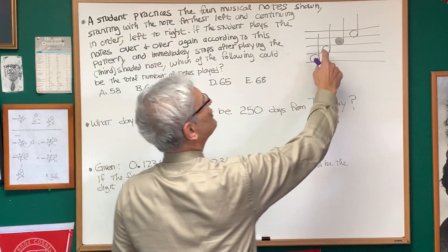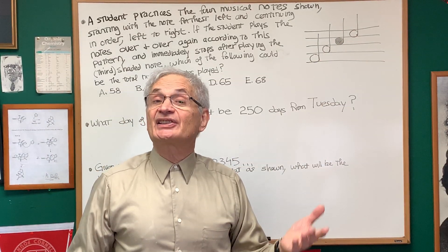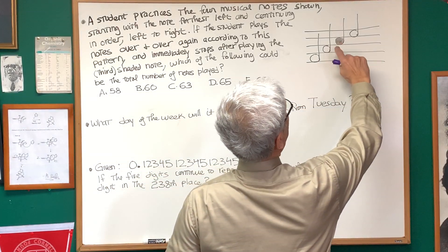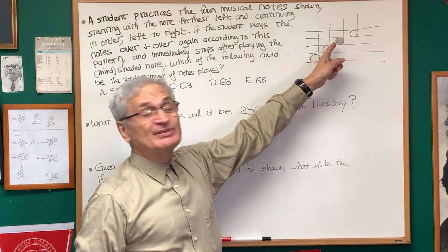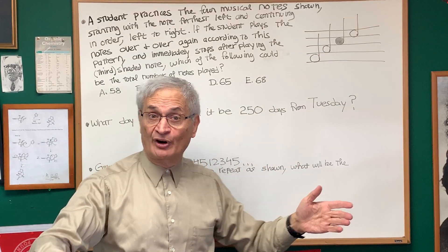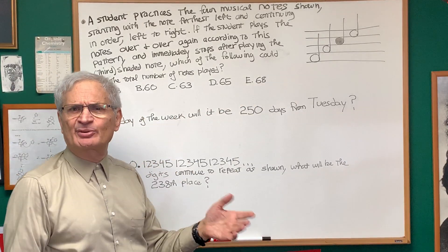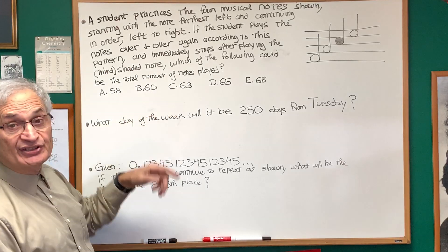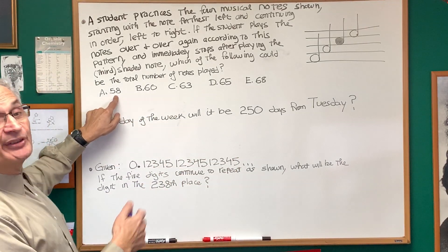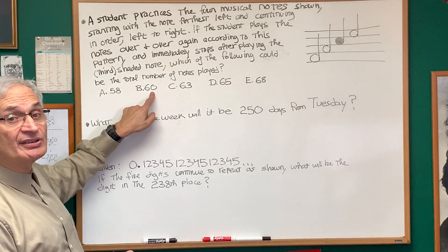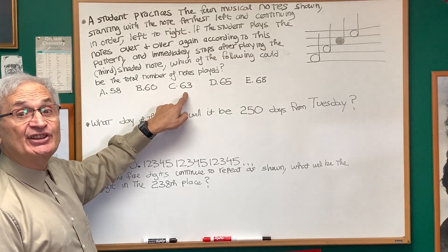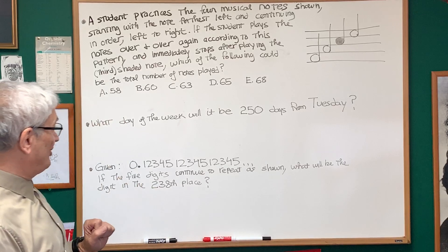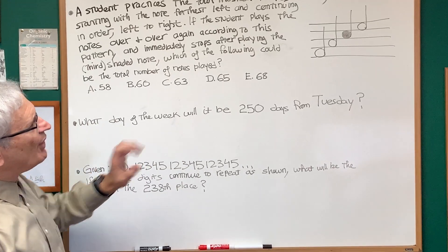Let's take a look at this. Every time the student plays four notes, the number of notes he's played is a multiple of four. He plays them over and over again. But when he plays it the last time and he stops at the shaded note, he stops at the third note — one short of a multiple of four. So which of the possible numbers could represent the number of times he's played this sequence? It's going to be the number that's one short of a multiple of four. Let's add one to each of these choices and see which one comes up as a multiple of four. Fifty-eight plus one? Fifty-nine — no. Sixty plus one? Sixty-one — not a multiple of four. Sixty-three plus one? Sixty-four — that's a multiple of four. So yes, he plays the sequence sixty-three times and stops at the darkened note.